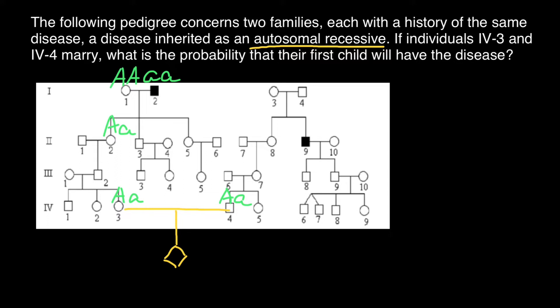Her husband we also assume is homozygous dominant — homozygous normal. The son of this couple, from the father's side, can only get the dominant allele. But from the mother's side, he can get the dominant allele or the recessive allele. So the probability to get the recessive allele is going to be one half.